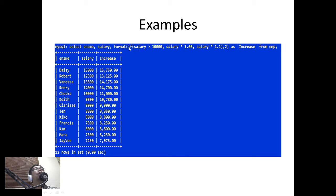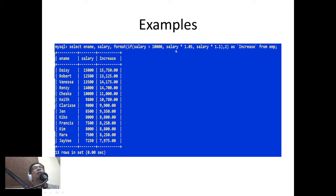Here is another example using the IF function. I have ename, salary, and then FORMAT with 2 decimal places — so FORMAT(value, 2) formats the number with two decimal places, adding comma separators. For the IF function: if a condition is true, it executes one part — for example, salary * 1.05; if not true, it executes the false part. So we have the condition, the true value, and the false value. That is an example of the IF function.